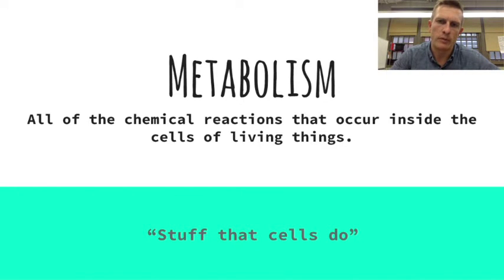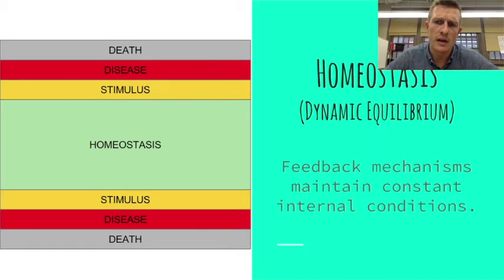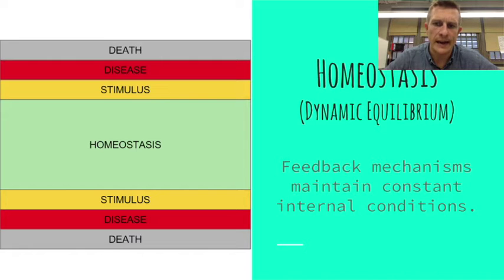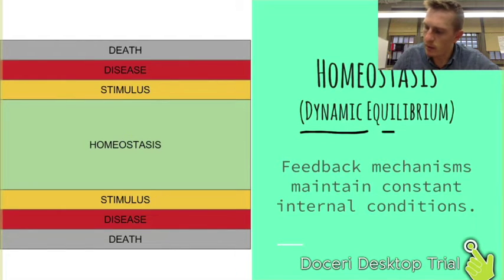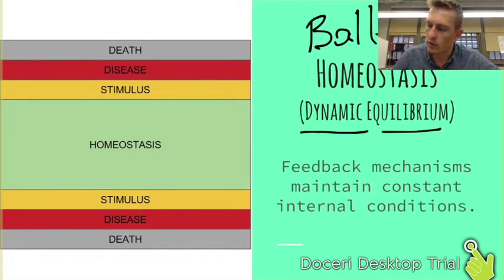Homeostasis is the process by which organisms maintain constant internal conditions. Sometimes they refer to homeostasis as dynamic equilibrium, and other times they'll just say balance — it's when an organism is in balance.